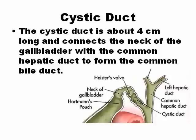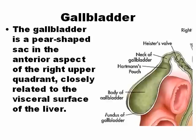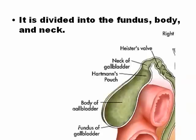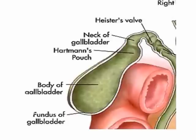The cystic duct is about 4 cm long and connects the neck of the gallbladder with the common hepatic duct to form the common bile duct. The gallbladder is a pear-shaped sac in the anterior aspect of the right upper quadrant, very close to the inferior surface of the liver. There is a fossa in the liver called the oval fossa where the gallbladder sits. It is divided into three parts: fundus, body, and neck, and the cystic duct is here.